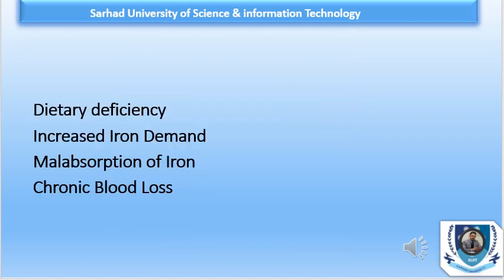Regarding the etiology of IDA, iron deficiency anemia develops when there is an inadequate amount of iron for hemoglobin synthesis. The causes include dietary deficiency, increased iron demand, malabsorption of iron, and chronic blood loss. Dietary deficiency mostly occurs in undeveloped countries, especially during infancy and childhood, because the iron content of milk is very low.